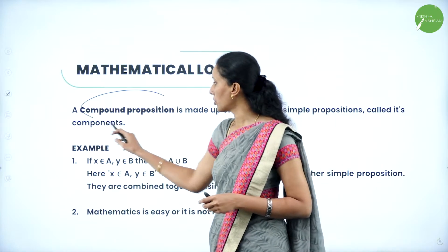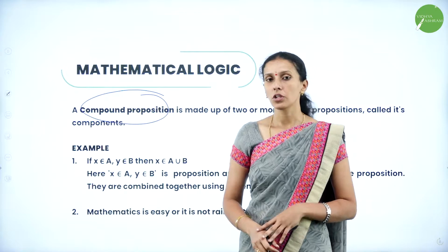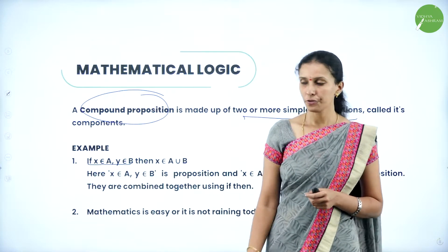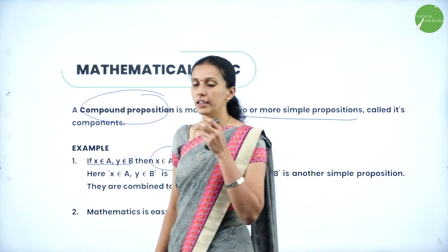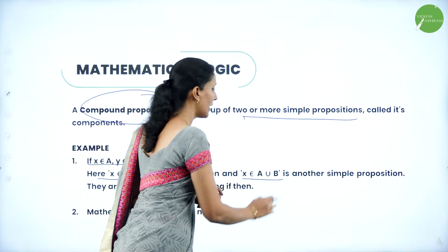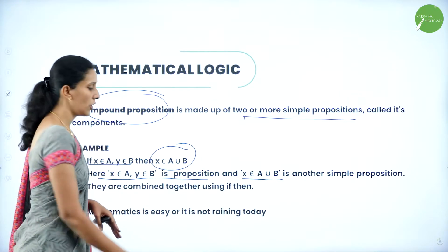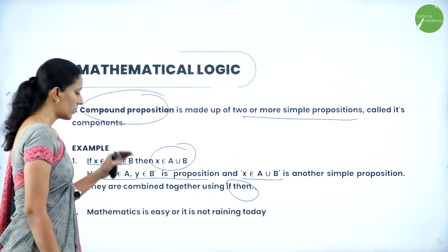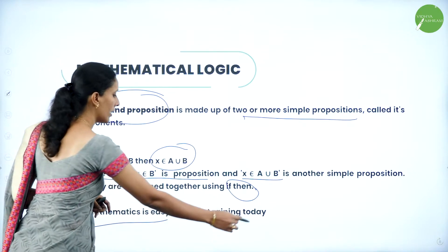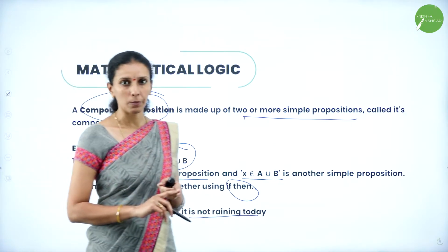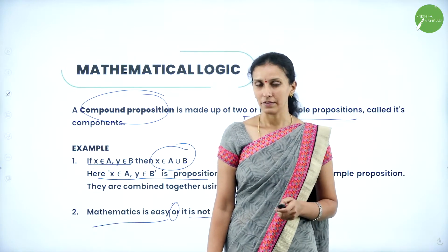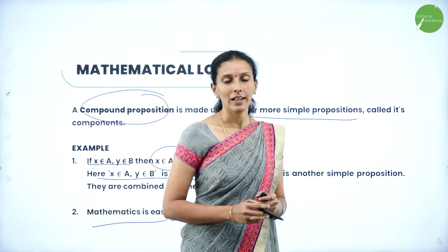Next we have compound propositions, which are opposite to simple propositions — they are made up of two or more simple propositions. For example, 'if x belongs to A and y belongs to B, then x belongs to A union B.' The first half is one simple proposition, the second half another, combined using 'if...then.' Another example: 'mathematics is easy or it is not raining today' — two simple propositions connected using 'or.' These connectors are called logical connectives.